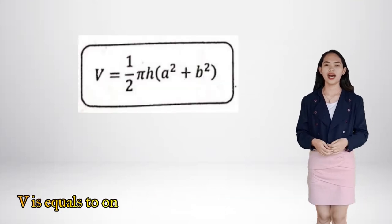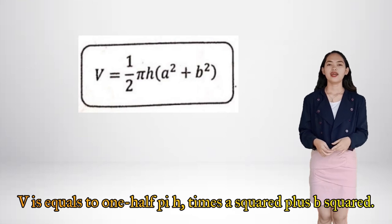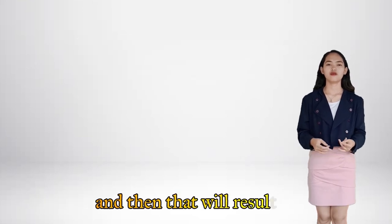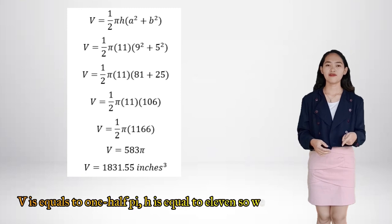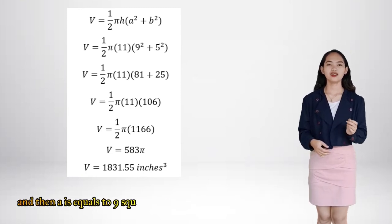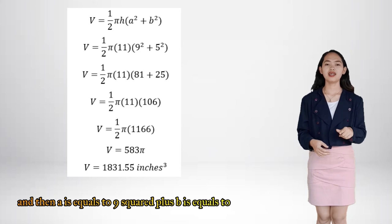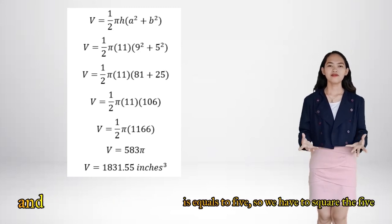So we have to plug in those given numbers into the formula, which is V equals one-half pi H times A squared plus B squared. And then that will result to V equals one-half pi times 11 times 9 squared plus 5 squared.